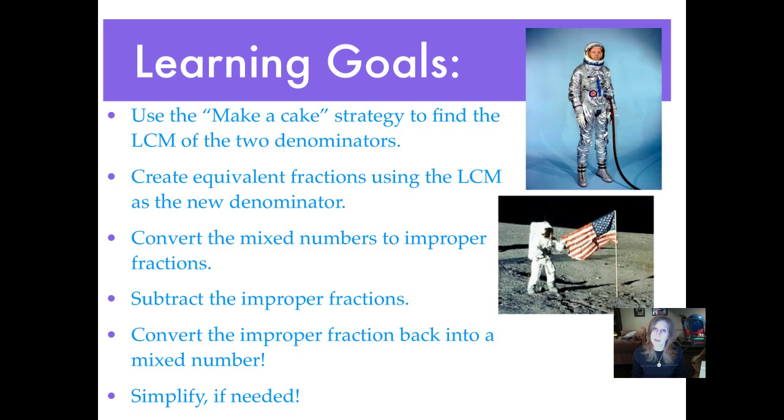Number one, use the make-a-cake strategy to find the LCM of the two denominators. Number two, create equivalent fractions using the LCM as the new denominator. Number three, convert those mixed numbers to improper fractions. That's going to be important tonight. Number four, subtract the improper fractions. Number five, convert the improper fraction back into a mixed number and simplify if needed.